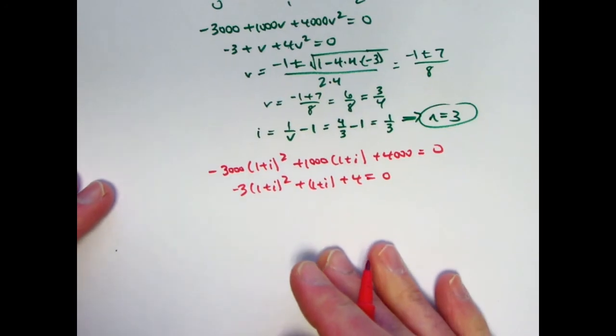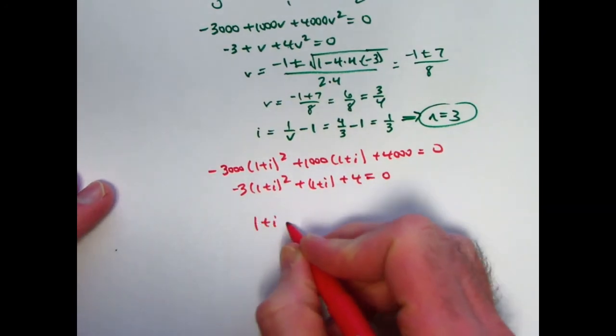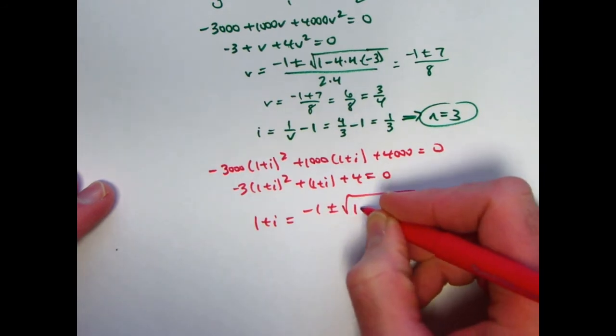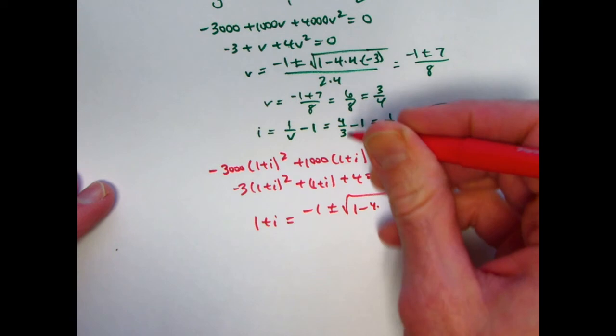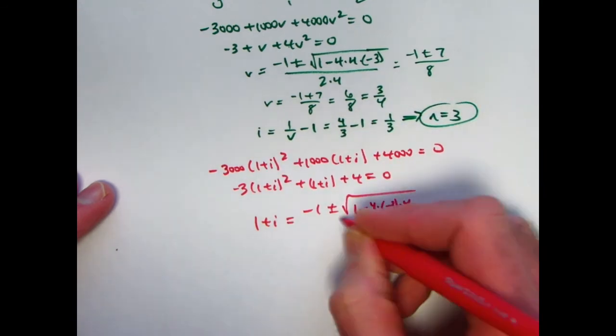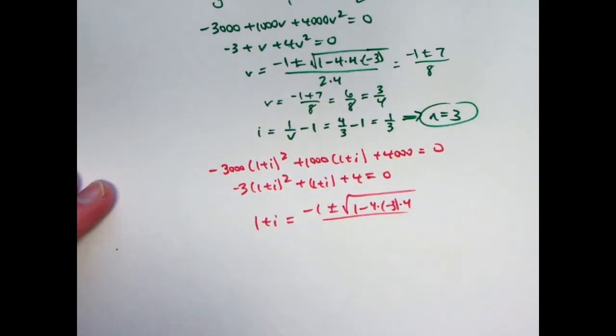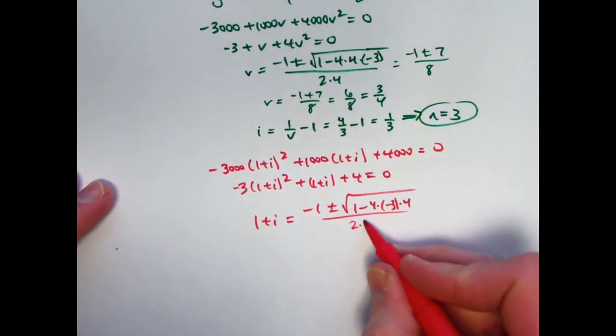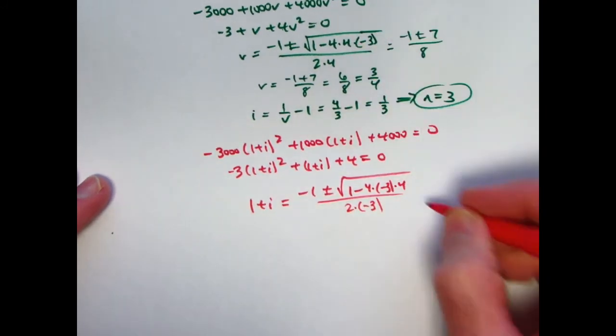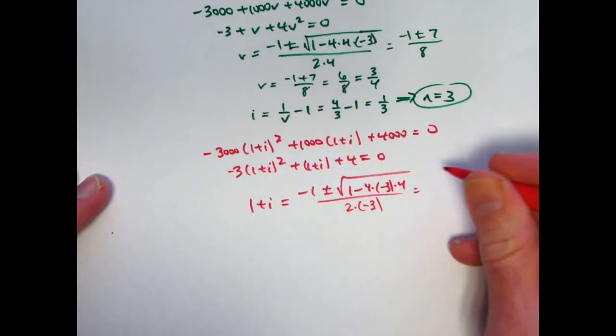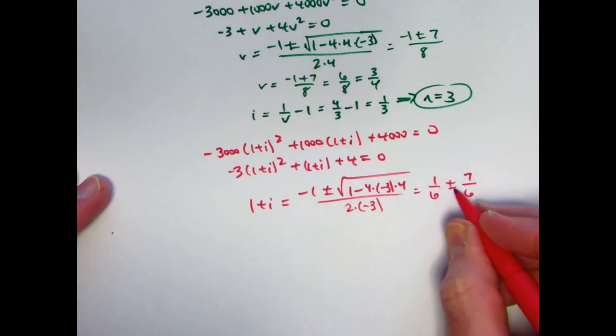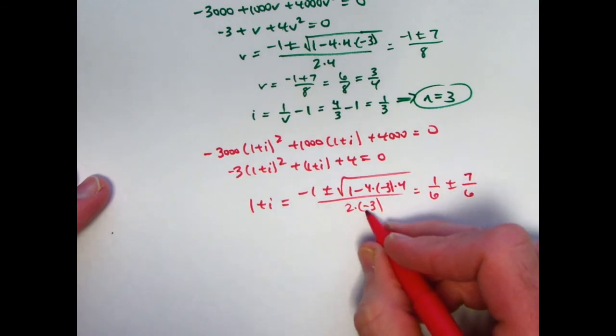Now that's a quadratic in 1 plus i. 1 plus i will be negative 1 plus or minus the square root of 1 squared, which is 1 minus 4 times negative 3 times 4. The stuff on the top is going to be the same. We have 2 times negative 3 now on the bottom. So this gives us negative 1 sixth plus or minus the square root of 49, which is 7 over 6.